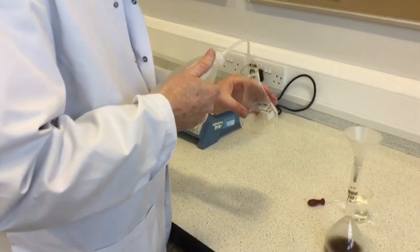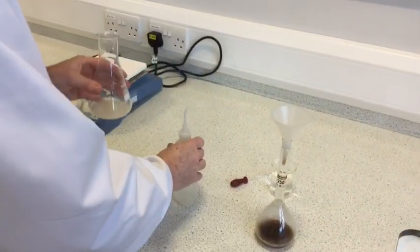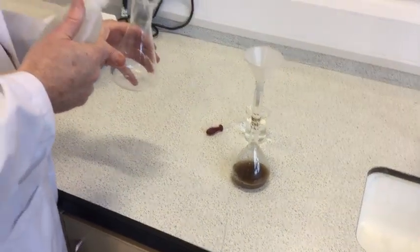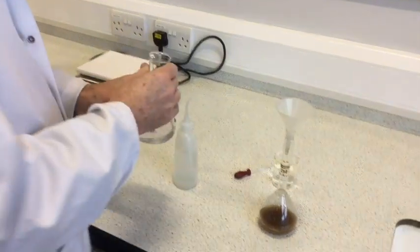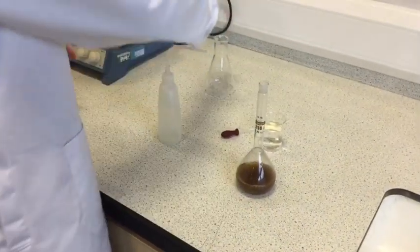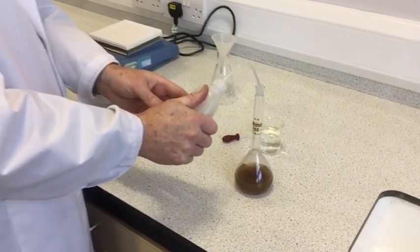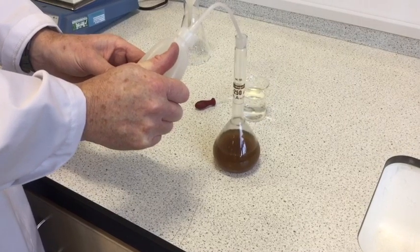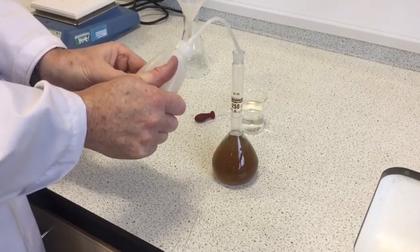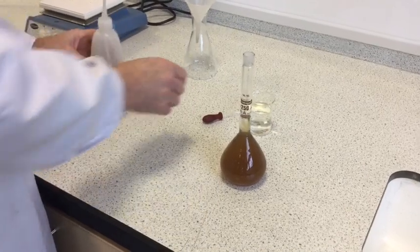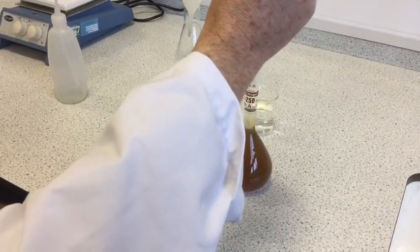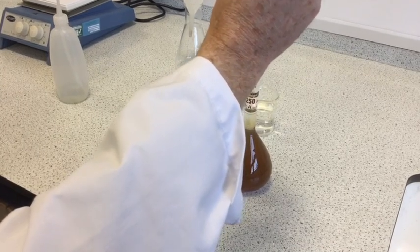We'll wash the side of the beaker. Transfer the washings. I'll do that a second time. I'll get it near to the mark. And then the last few drops I'll add using a dropping funnel. Okay, that's spot on.